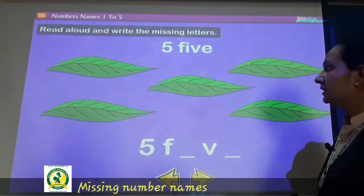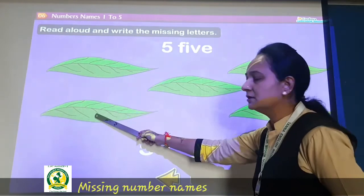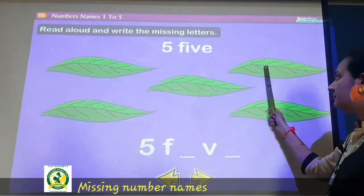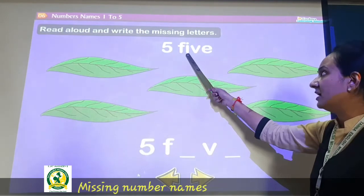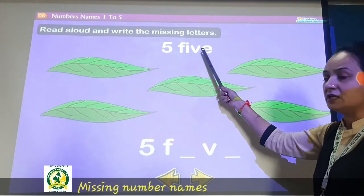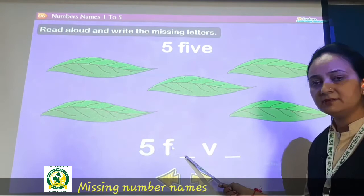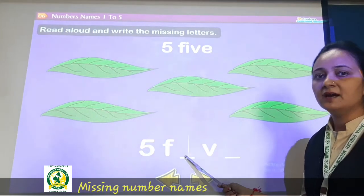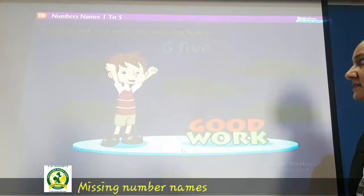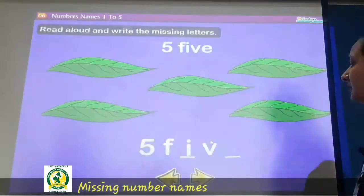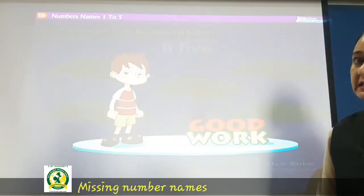Very good! Now how many names are there? Let us count — 1, 2, 3, 4, and 5 names are there. F, I, V, E — FIVE. So write here: F is given, what will be right here? I — yes, very good! V is given, what will be right here? E.